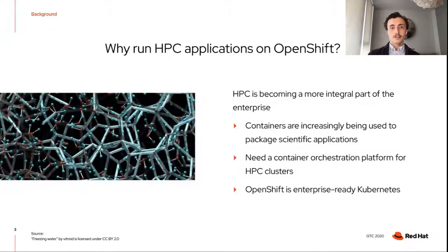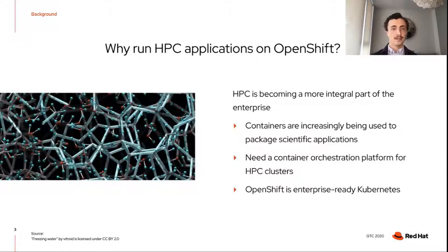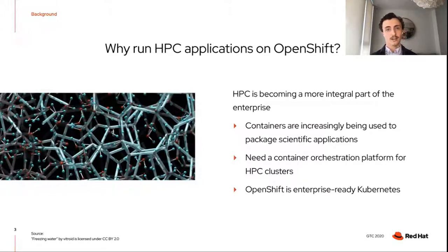To give some context: why am I trying to run GROMACS on OpenShift? With the emergence of big data and machine learning, scientific computing is becoming a more integral part of enterprise computing. Organizations are running more and more HPC-like workloads to create value for their business, and this change coincides with the rise of containers and Kubernetes for deploying enterprise applications. Increasingly, enterprise applications are deployed in the cloud and in the data center as containers and microservices.